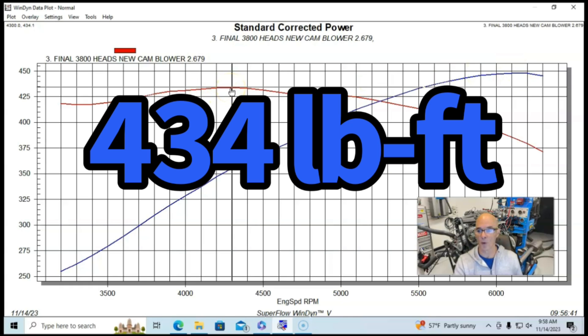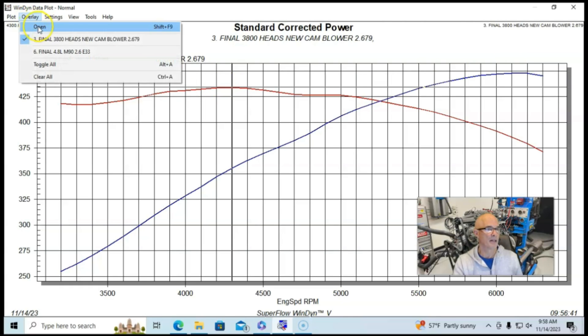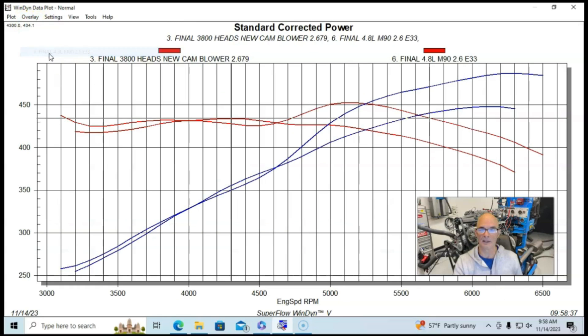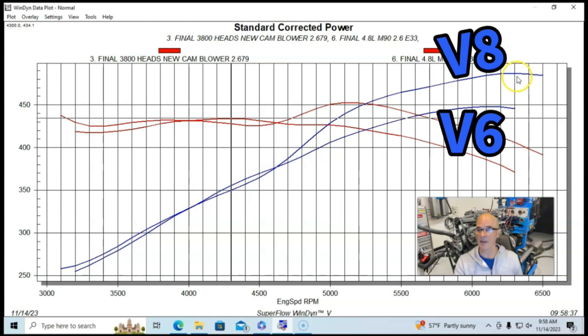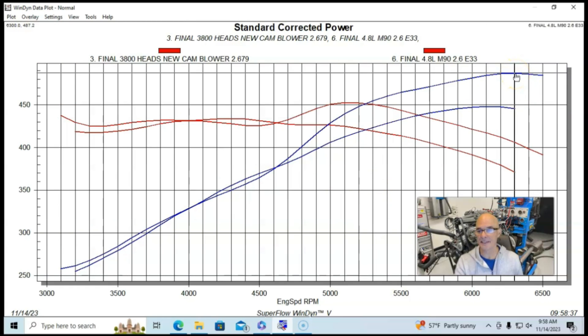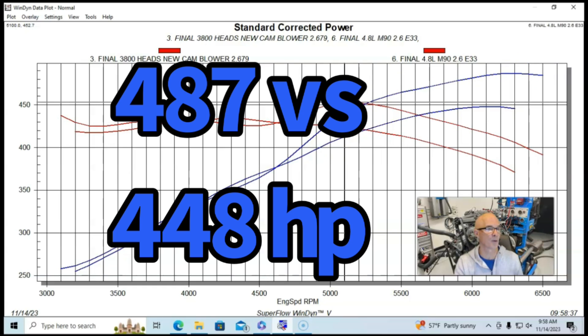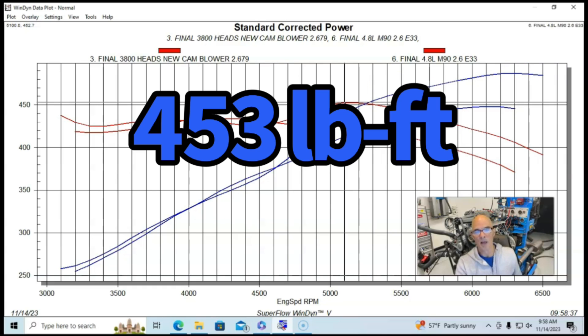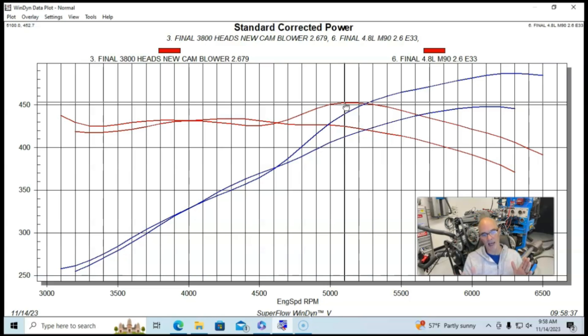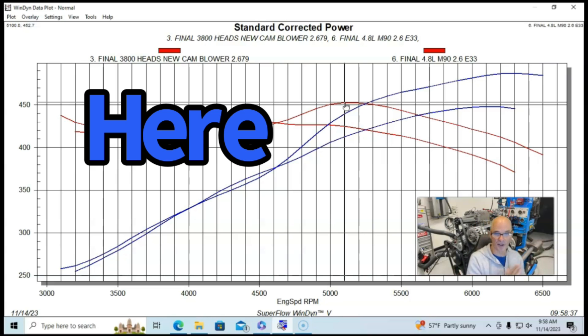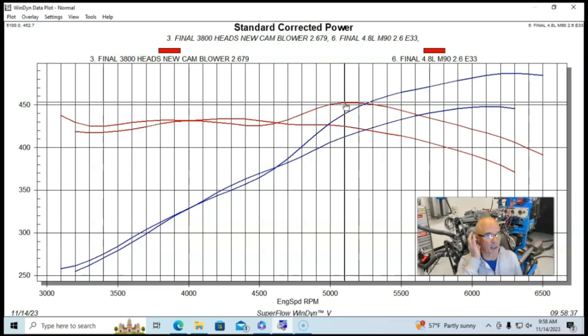Here is our 4.8 liter V8. You can see it definitely made more power—487 horsepower. Peak torque checked in at 453 foot-pounds of torque.